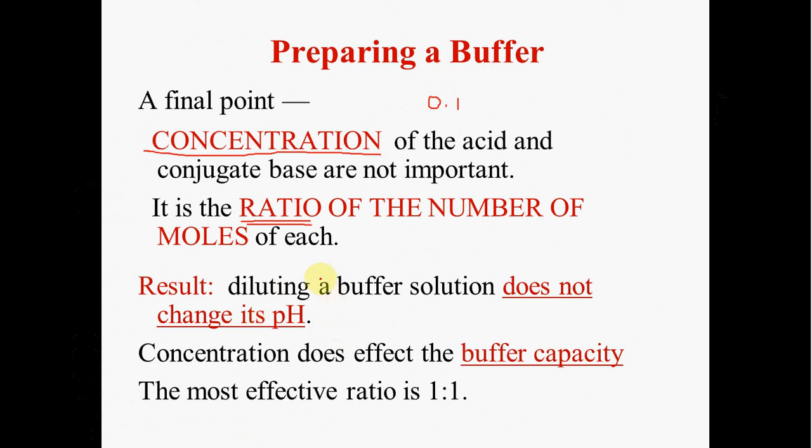But make sure you understand, while diluting a buffer solution does not change its pH, it does affect the buffer capacity. So if you have a one molar buffer capacity versus a 0.1, you're going to be able to interact with more additional hydronium and hydroxide ion before your buffer is not able to work anymore. The most effective buffer ratio that you want is 1 to 1. That means that you have picked an acid with a Ka very close to the hydronium ion concentration that you're looking for.